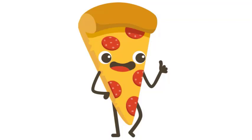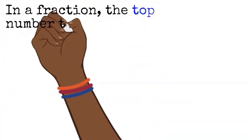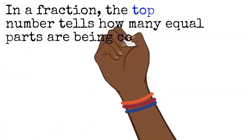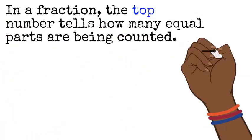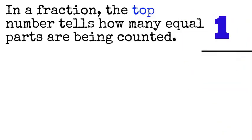Now, where were we? Sorry about that interruption there. In a fraction, the top number tells how many equal parts are being counted. So you would draw a line, a bar like this, to separate the top from the bottom and the top number would represent the equal parts being counted.